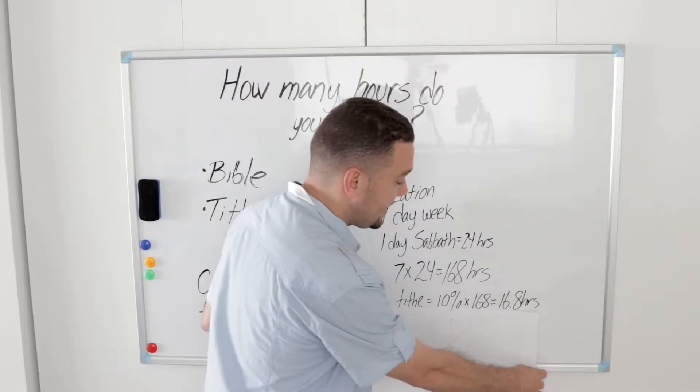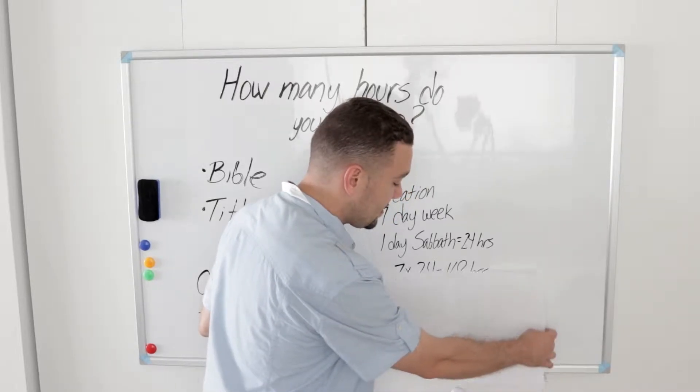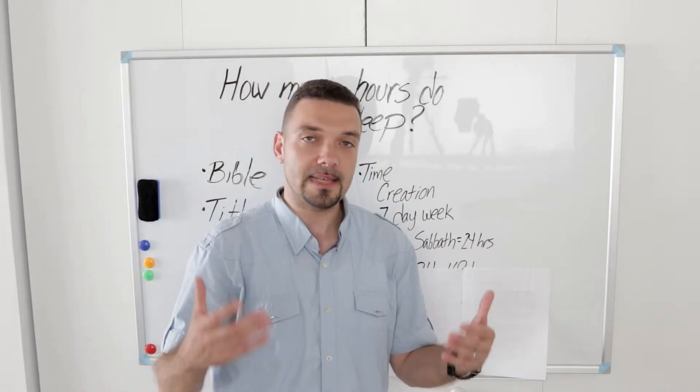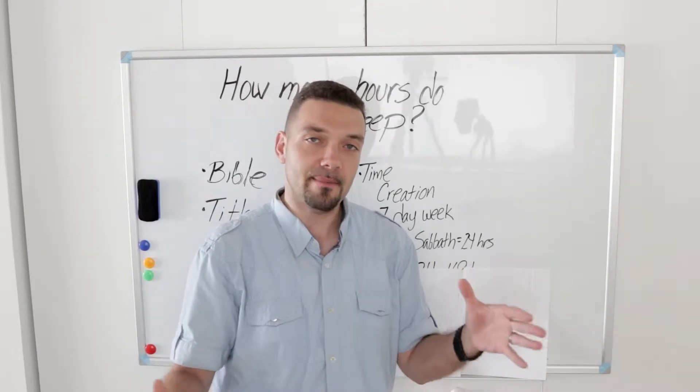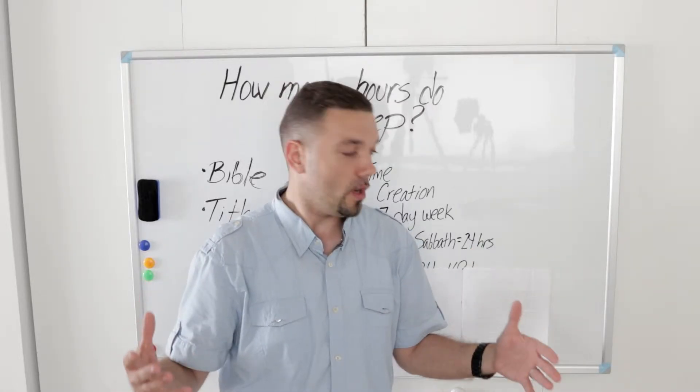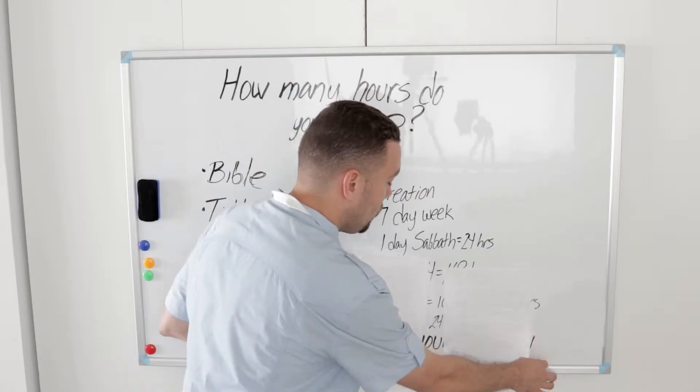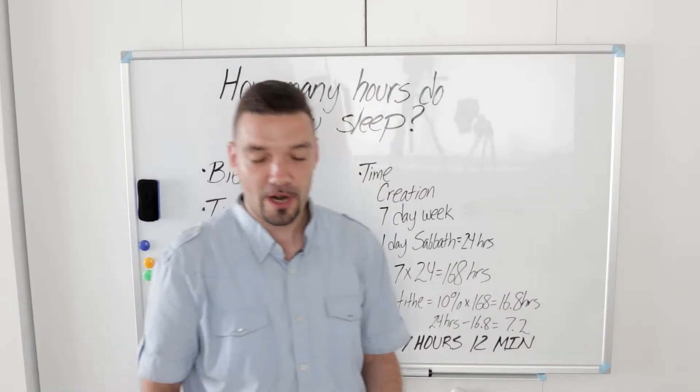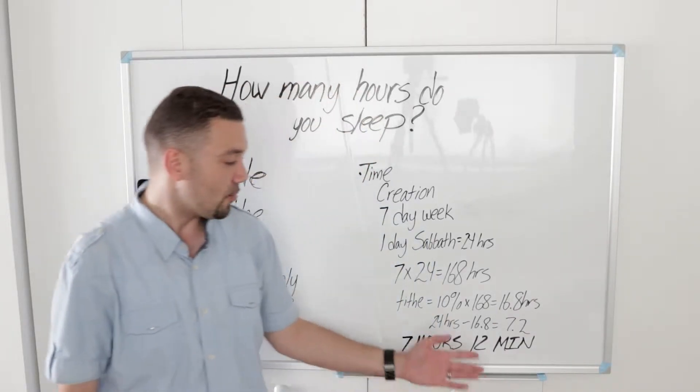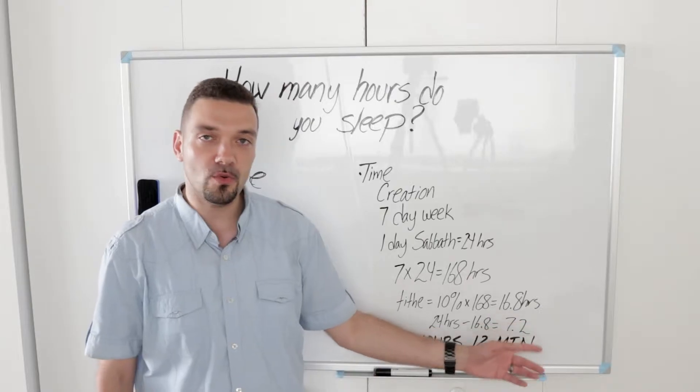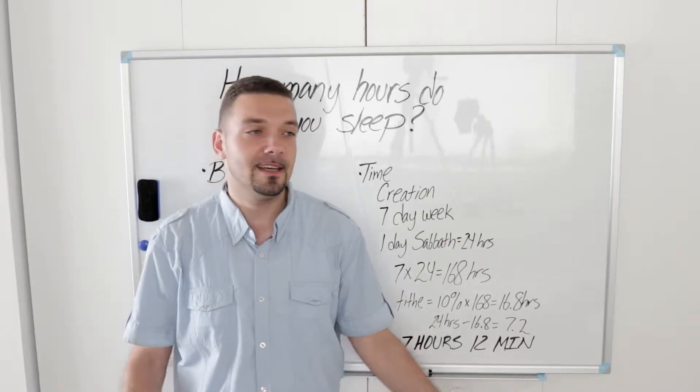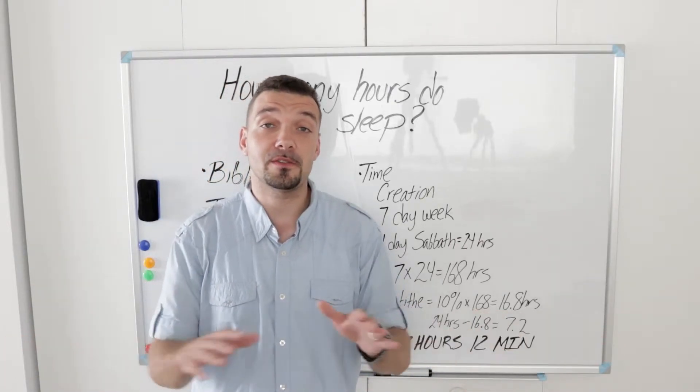When you take 10% of that, you tithe, you get 16.8 hours. This concept of the 16.8 would be the whole concept of the Sabbath day. So what if we take the 24 hour day and subtract 16.8 hours? We have 7.2 hours left. That translates into 7 hours and 12 minutes.